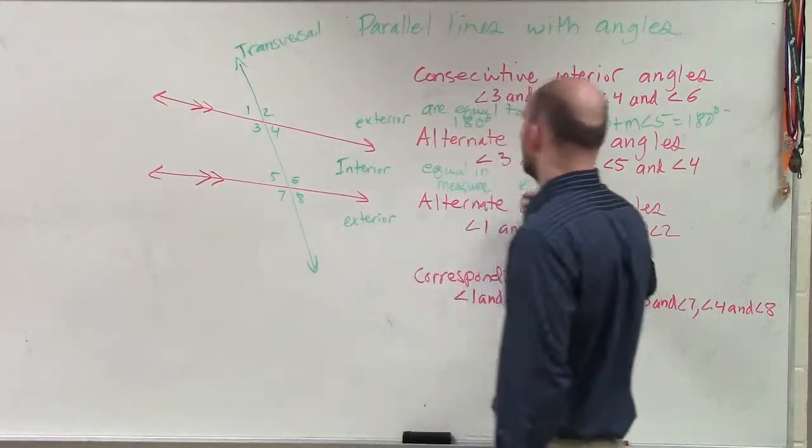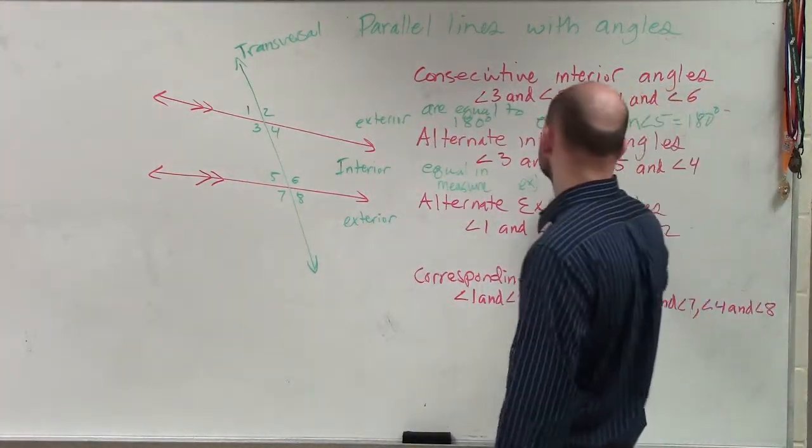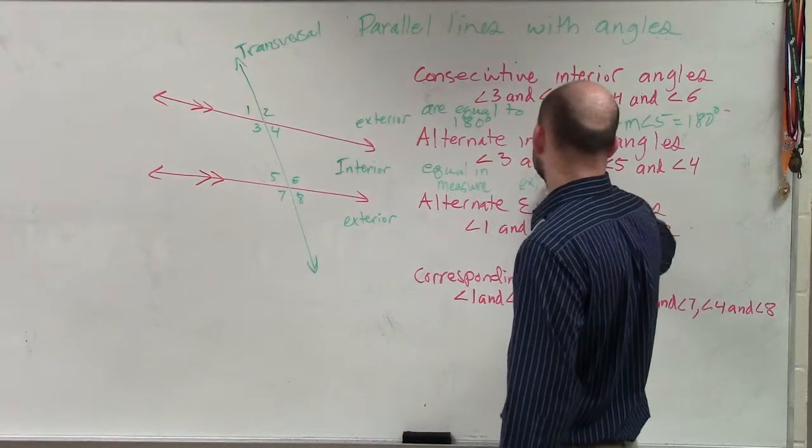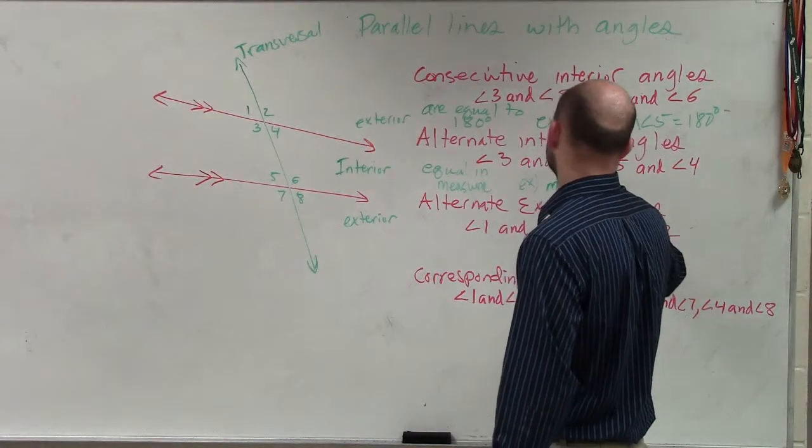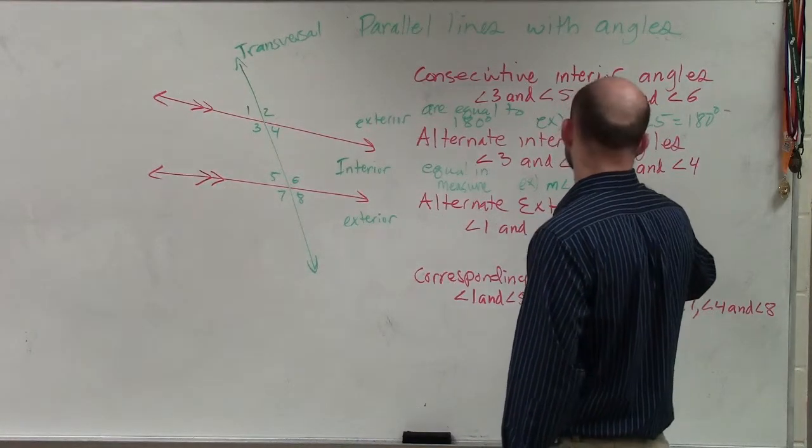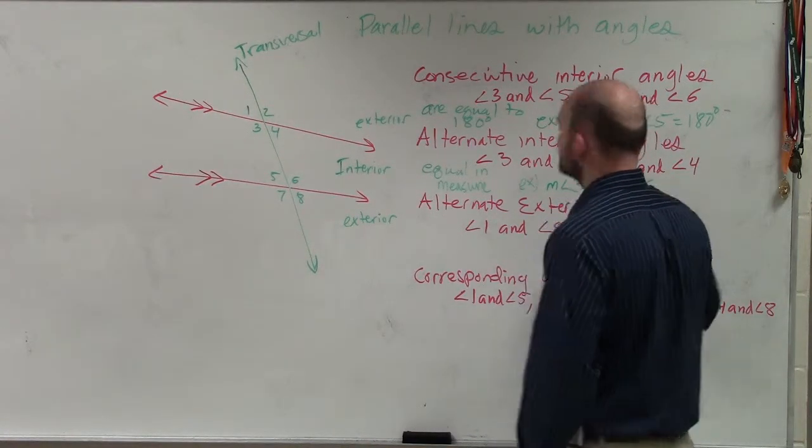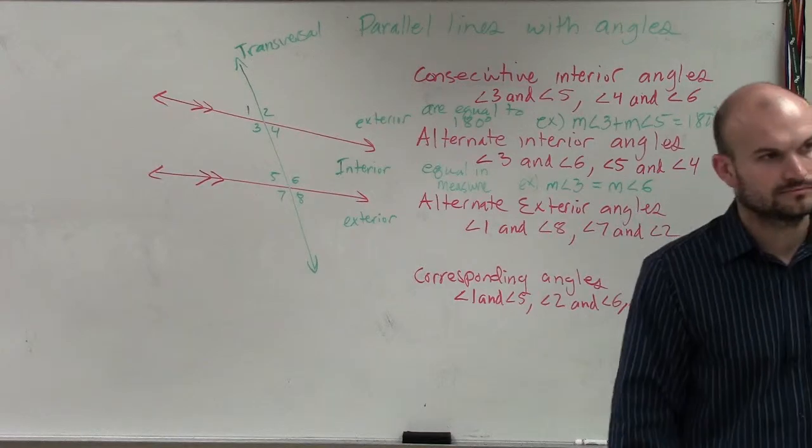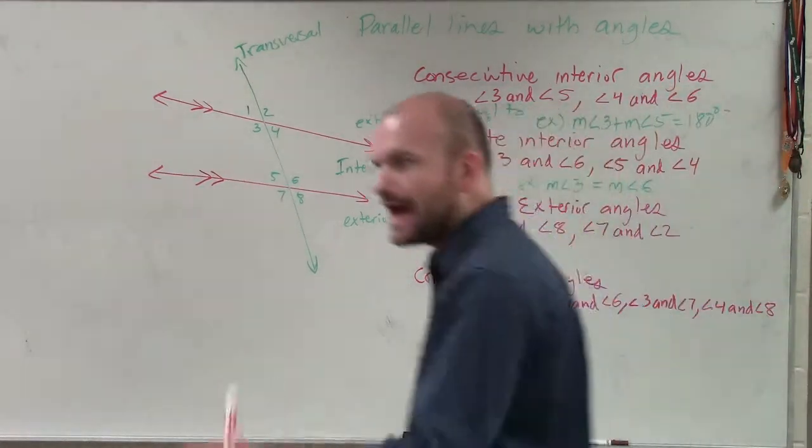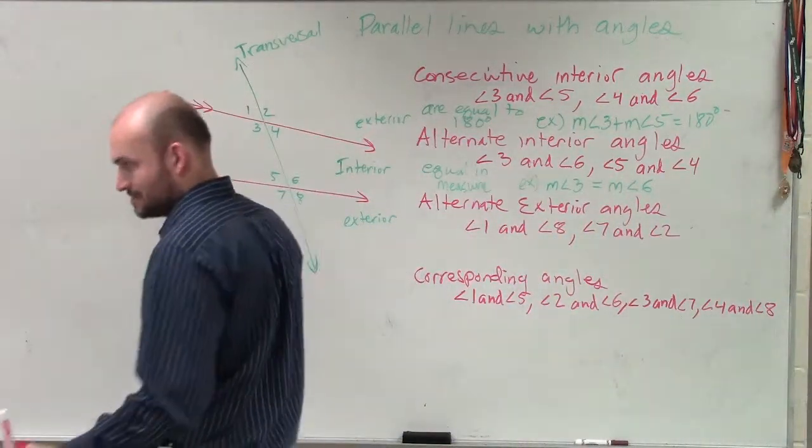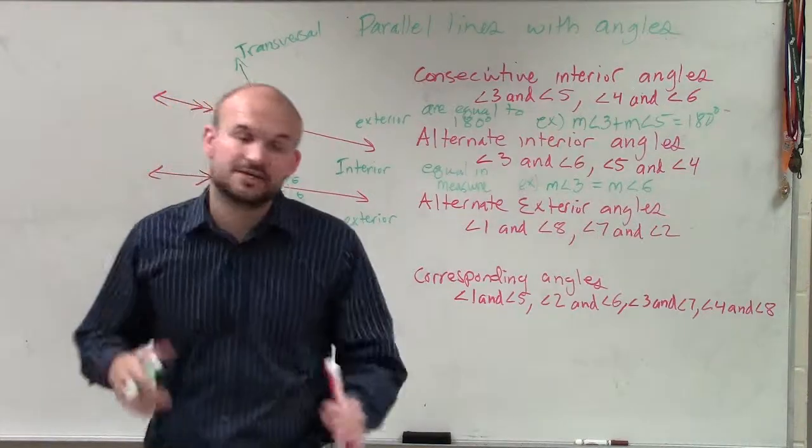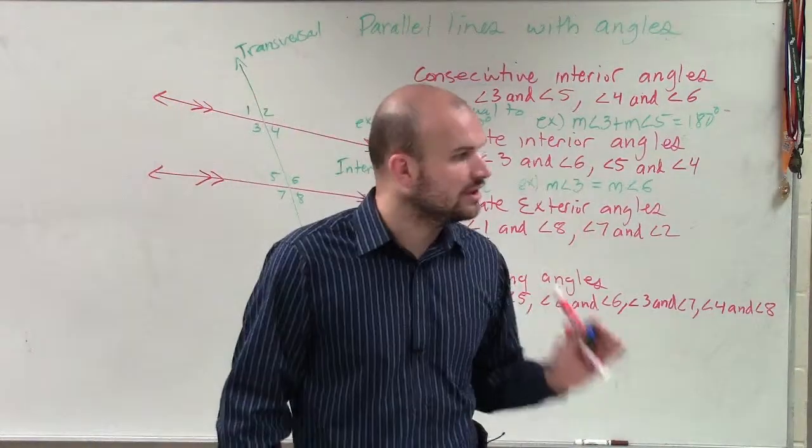So therefore, an example of alternate interior angles: you can say that the measure of angle 3 is equal to the measure of angle 6. When you have parallel lines, alternate interior angles are equal in measure.